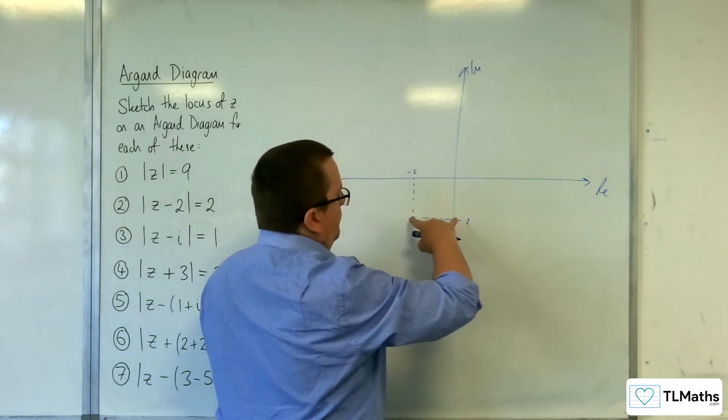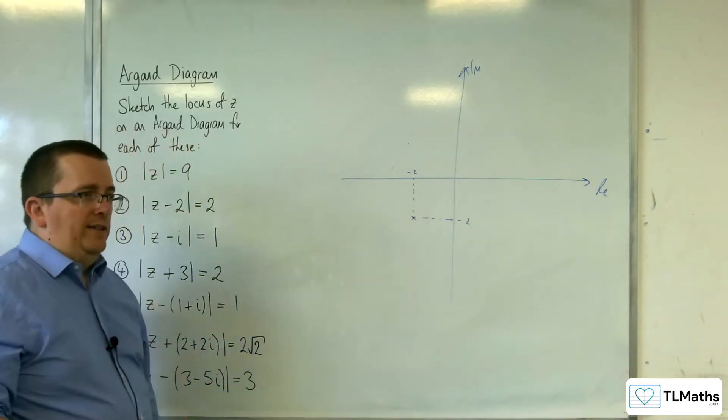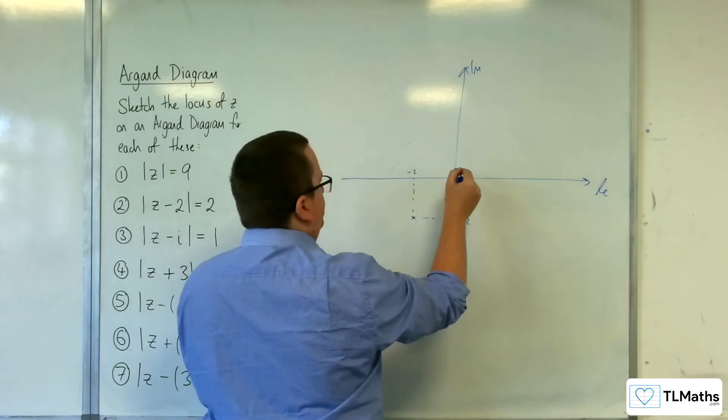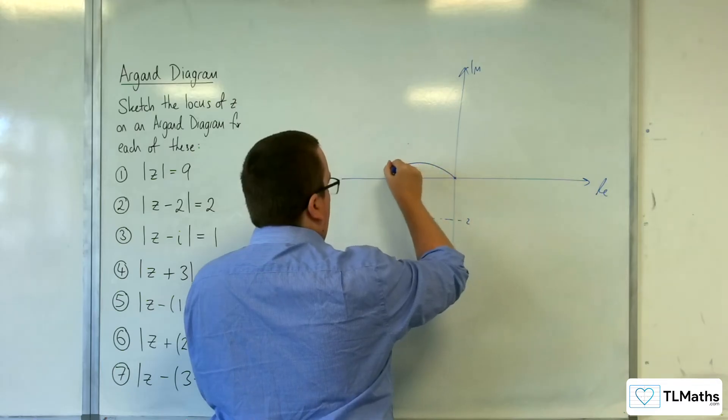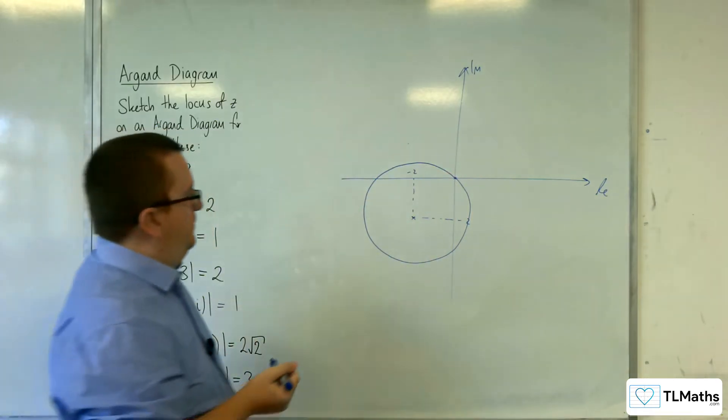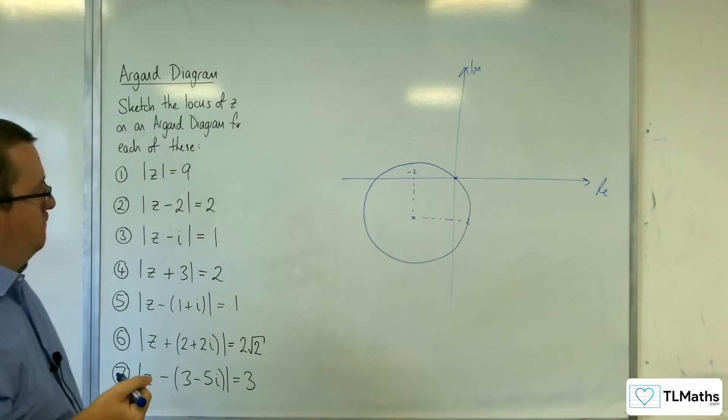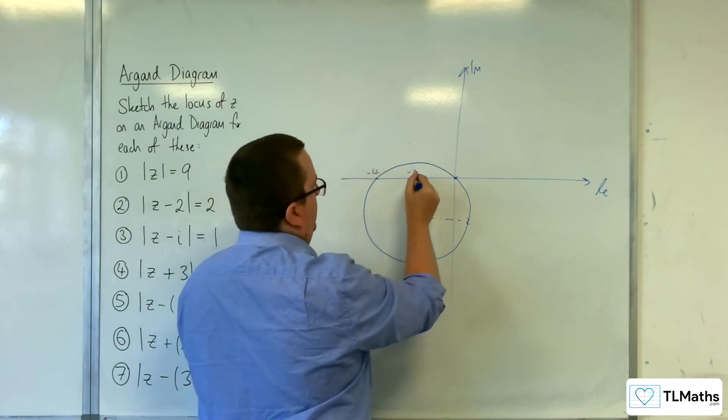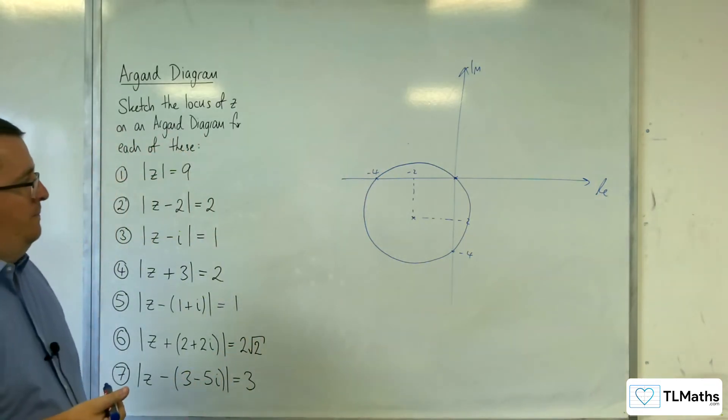Now, the length of that vector there is going to be 2 squared plus 2 squared, which is the square root of 8, which is 2 root 2. So that means that it's going through the centre. Not the easiest thing to draw. Something like that, going through the origin there.